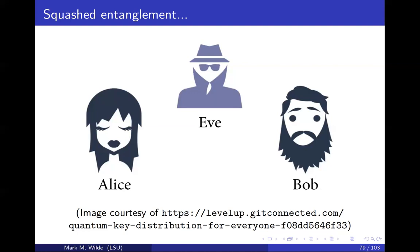In this final lecture, we'll talk about squashed entanglement. This picture is helpful for thinking about squashed entanglement — it's a cryptographic picture. We have two protagonists, Alice and Bob, who are trying to get a secret key that's unknown to the antagonist Eve in the middle. This kind of thinking is helpful when thinking about squashed entanglement.